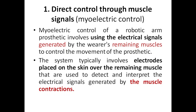That is why it is called direct control through muscle signals — because the remaining muscles are connected to the prosthetic so that muscle movement directly transfers to the prosthetic. No brain machine interface is required here. The system typically involves electrodes placed on the skin over the remaining muscles to detect and interpret the electrical signals generated by muscle contraction. The electrodes are kept just over the skin — wherever the amputation is, you place the electrode there to sense the signals generated by the muscles, which were originally received from the brain.